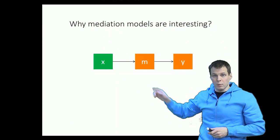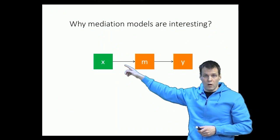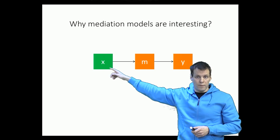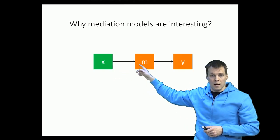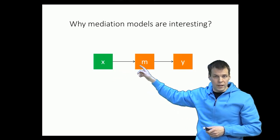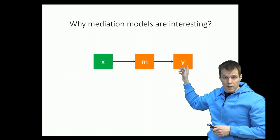A mediation model is typically presented with this kind of path diagram. You have the x variable, the first cause, then you have the mediator variable through which the effect goes, and then you have y, the final dependent variable.